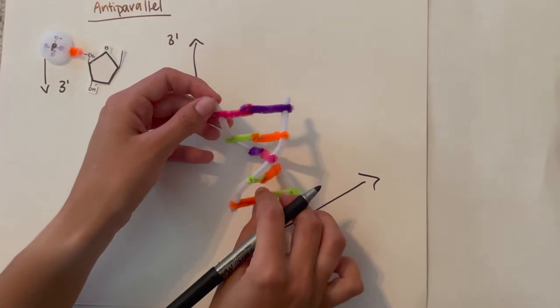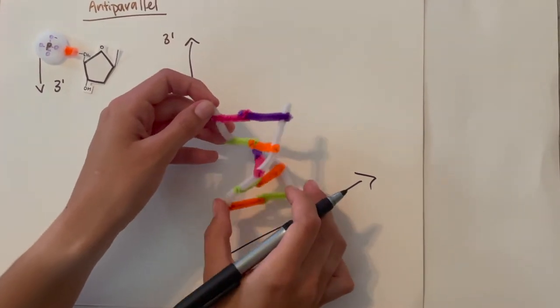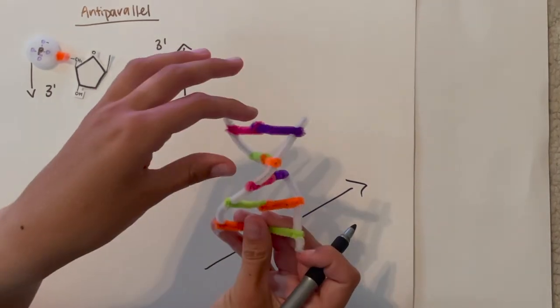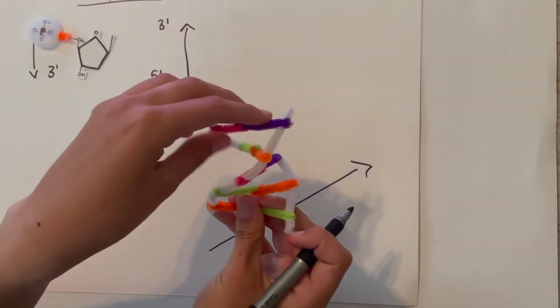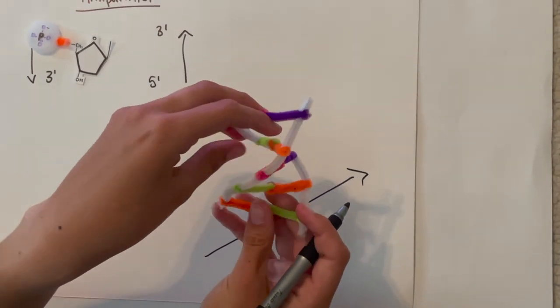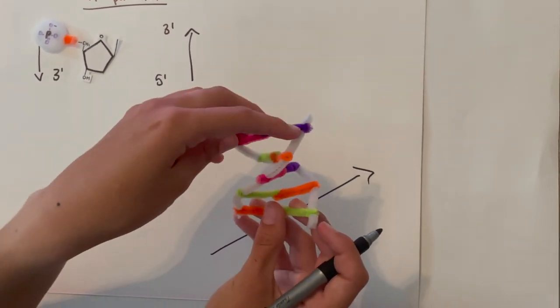And also there are major and minor grooves, the secondary structure of DNA, since it is this double helix wraparound. Minor groove is the base pairs interacting, and then the major groove is when the phosphate backbones are interacting, making the gaps wider.